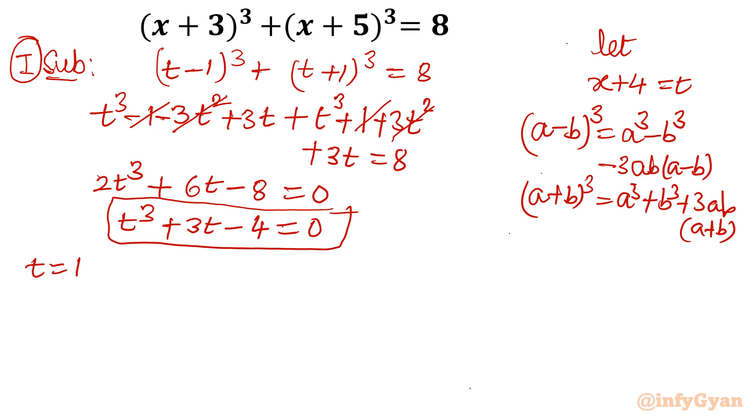So let me find out using synthetic division method the quadratic equation. So I will write 1, 0, 3, negative 4. I will write here the leading coefficient 1. Then I will multiply 1 times 1, 1, then 1, 4, 4 times 1, 4, 0.